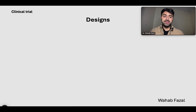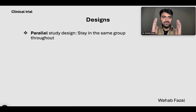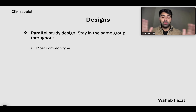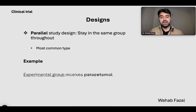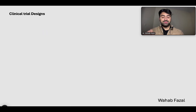Now let's talk about the different types of study designs. The first is a parallel study design. As the word suggests, both the experimental and control groups are parallel to each other. If someone is assigned to the experimental group, they stay in the experimental group throughout the study; if assigned to the control group, they stay there. This is the most common type of study design for a clinical trial.